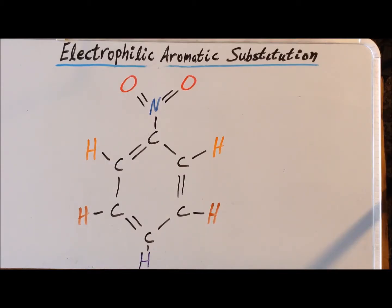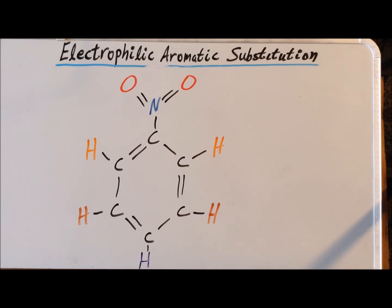The third group we are going to look at is the NO2 group, the nitro group. When attached to the benzene ring, this gives us the compound nitrobenzene. The nitro group is one of the most powerfully deactivating groups, so it's going to make the next substitution onto the ring much less likely than would be the case for the same substitution on the benzene ring, and because it is a ring deactivator, it overwhelmingly directs the next substituent to the meta position. Please see the following computed structures of the intermediates for addition to the ortho, meta, and para positions.